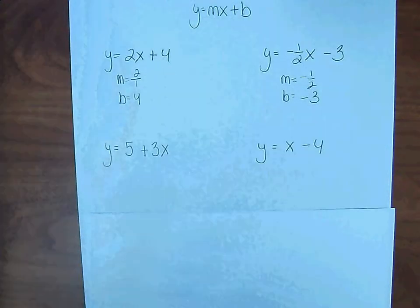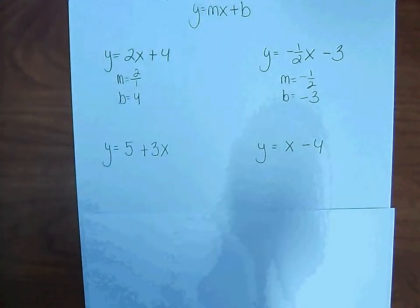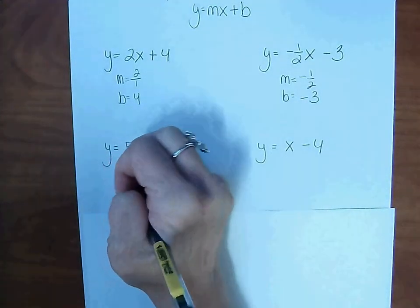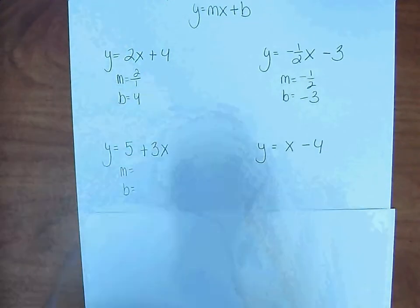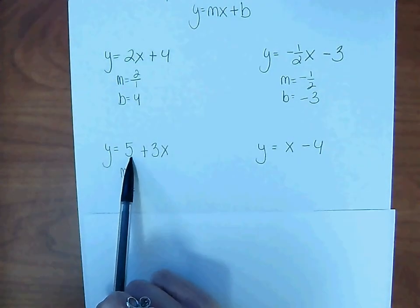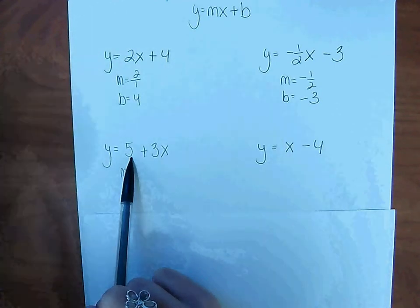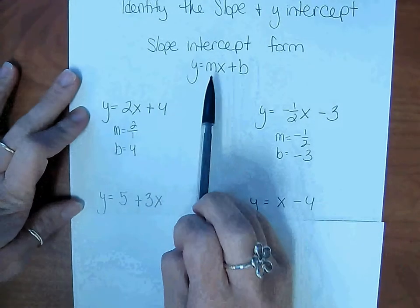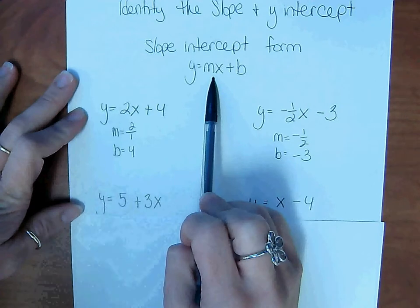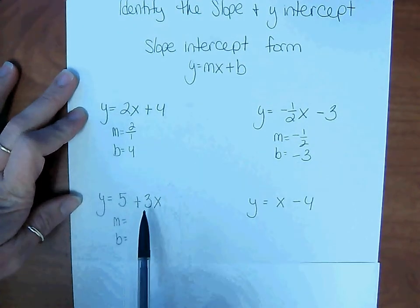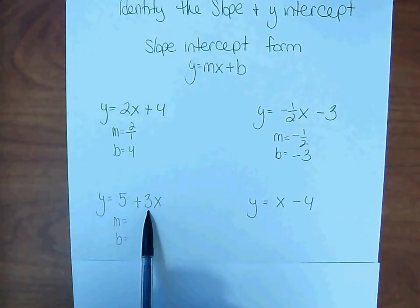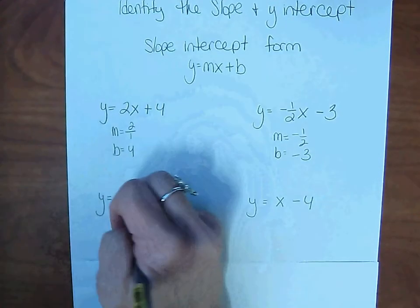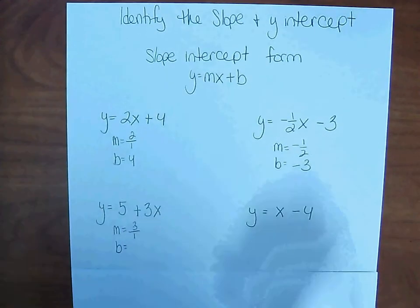y = 5 + 3x. Don't get confused and think that the slope is 5 because it's the first number you see. The slope is the number being multiplied by x. So here, the mx part and the b have been flipped. That's okay because addition is commutative. So the slope is 3/1, and the y-intercept is 5.